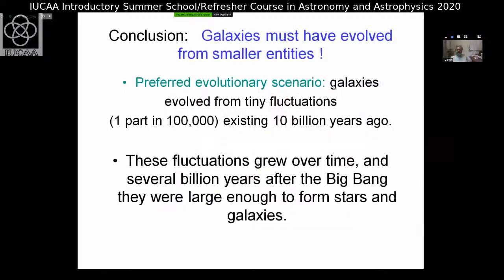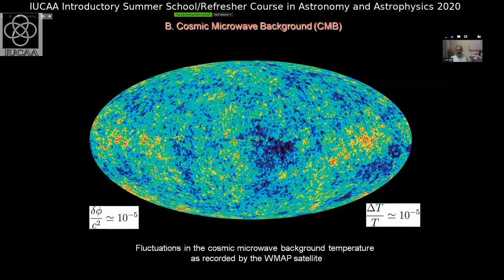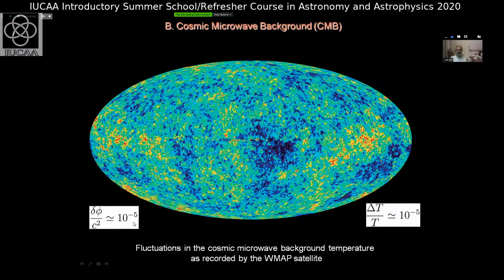Galaxies must have evolved from smaller entities. The preferred evolutionary scenario is that galaxies formed from tiny fluctuations existing over 10 billion years ago. These fluctuations grew over time, and several billion years after the Big Bang they were large enough to form stars and galaxies. Evidence for this evolutionary scenario comes from the cosmic microwave background — light from when the universe was only about 100,000 years old. This light is not perfectly smooth; it has irregularities expressible as temperature fluctuations of one part in about 100,000, which translate into fluctuations in the gravitational potential of the same magnitude.